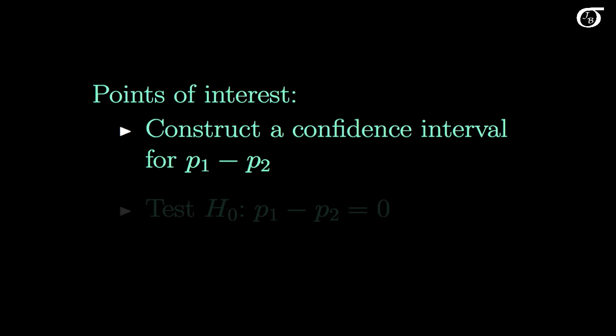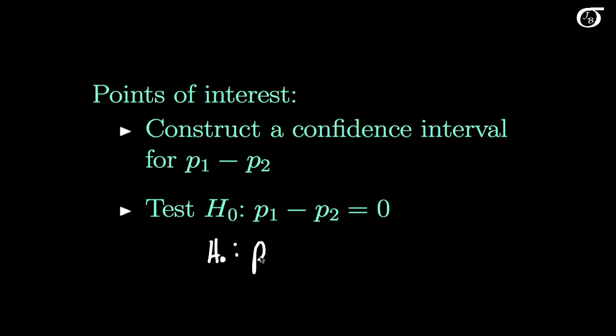Some points of interest for us: constructing a confidence interval for the difference in the population proportions, as well as testing the null hypothesis that the difference in proportions is equal to 0 — or equivalently, that the null hypothesis is that the two population proportions are actually equal. This is a very common test that we want to carry out.